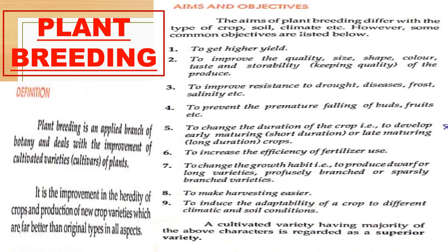The aim of plant breeding differs with the type of crop, soil, climate, etc. However, some common objectives are: to get higher yield; to improve the quality, size, shape, color, taste, and storability of the produce; to improve resistance to drought, disease, frost, and salinity; and to prevent the premature falling of buds, fruits, etc.